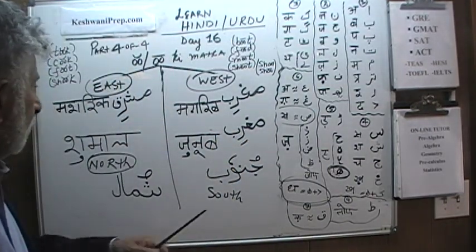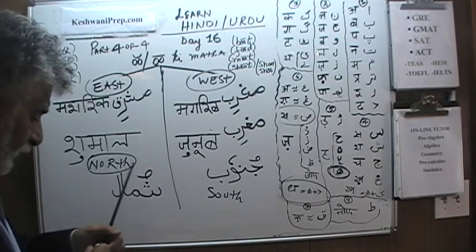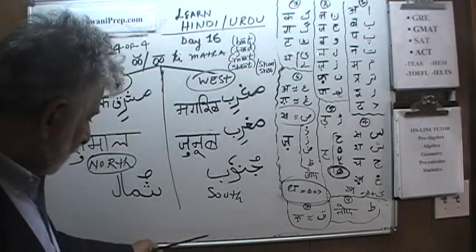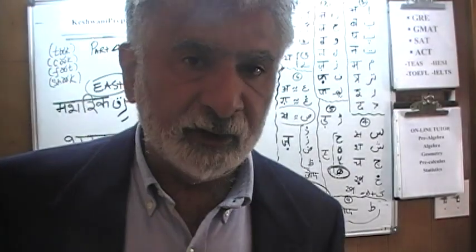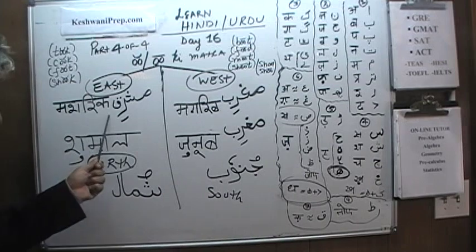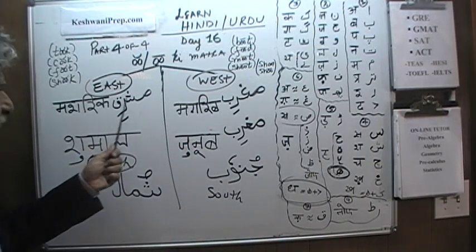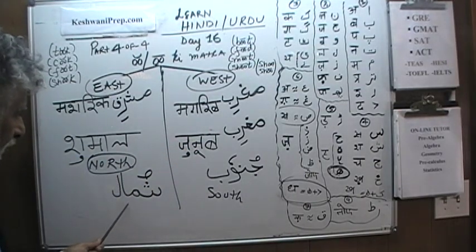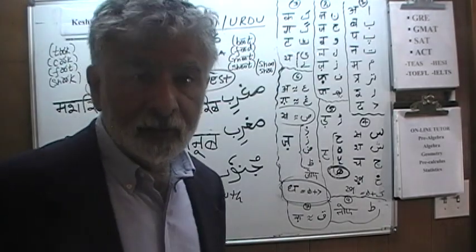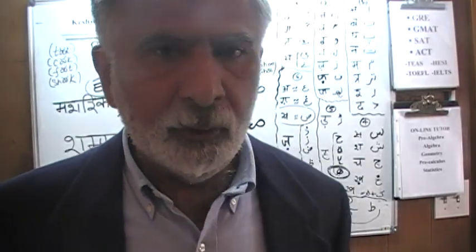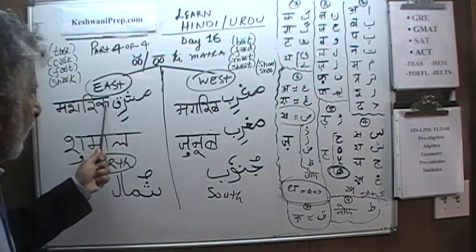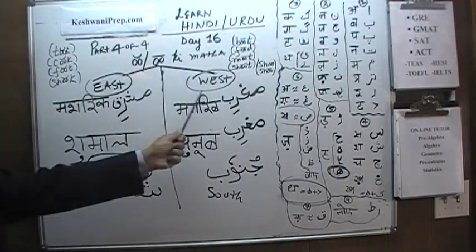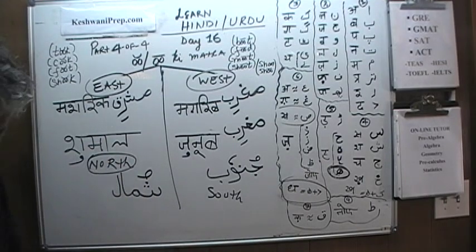That is how children are taught directions in schools in Pakistan: Mashriq, Maghrib, Shumal, Janub — East, West, North, South. Western countries are called Maghrib Mumalik; Eastern countries Mashriq Mumalik; Southern countries Janub Mumalik. Mulk means country; Mumalik is the plural.